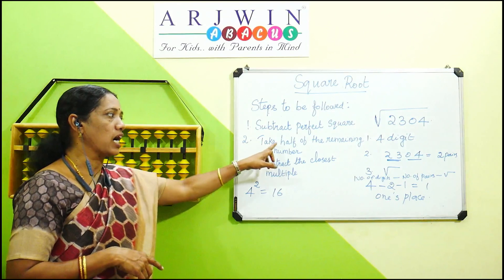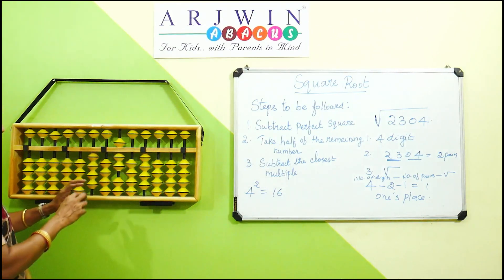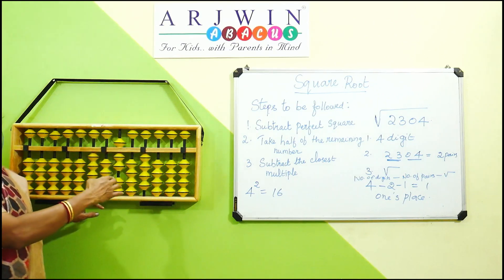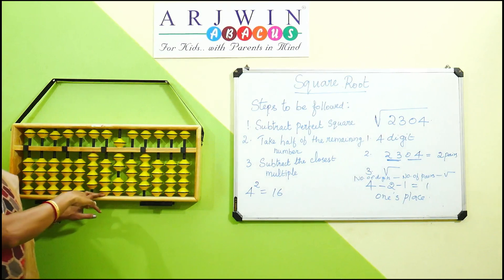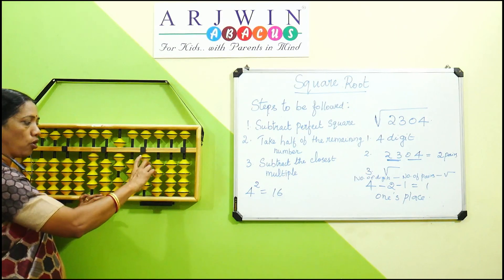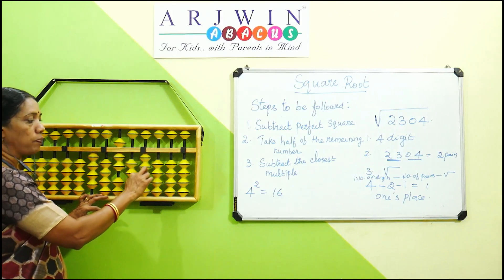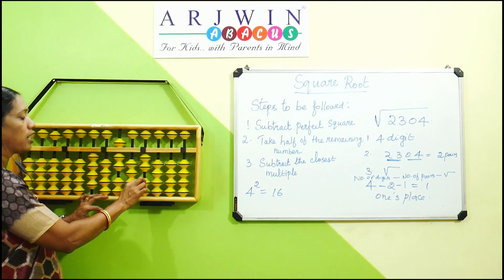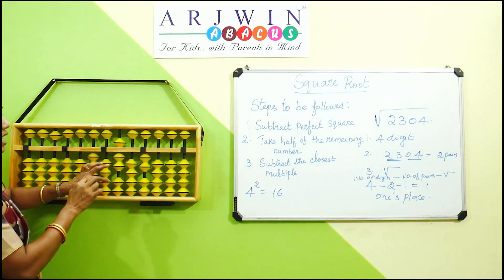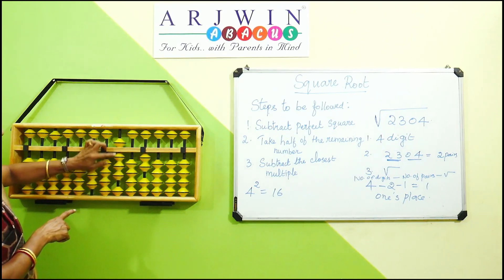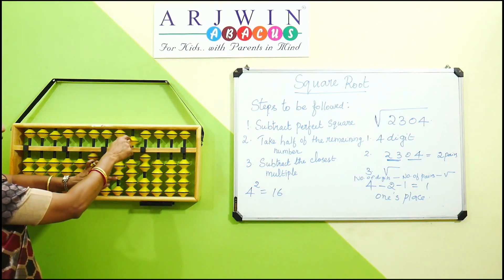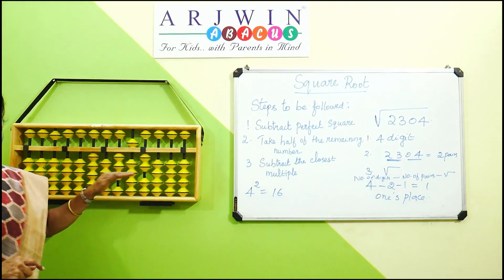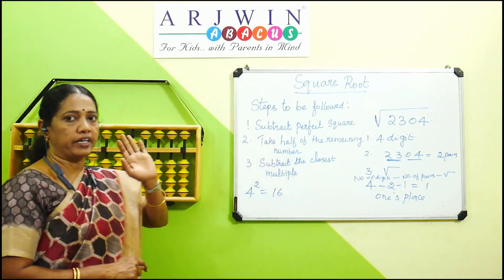Second step: take half of the remaining number. The remaining number is 704. We do halving starting from the right side. Half of 4 is 2.0, so place 2 and 0. Half of 7 is 3.5, so keep 3 in the next rod and 5 after it. So after halving, we have 352 on the abacus. Second step is complete.